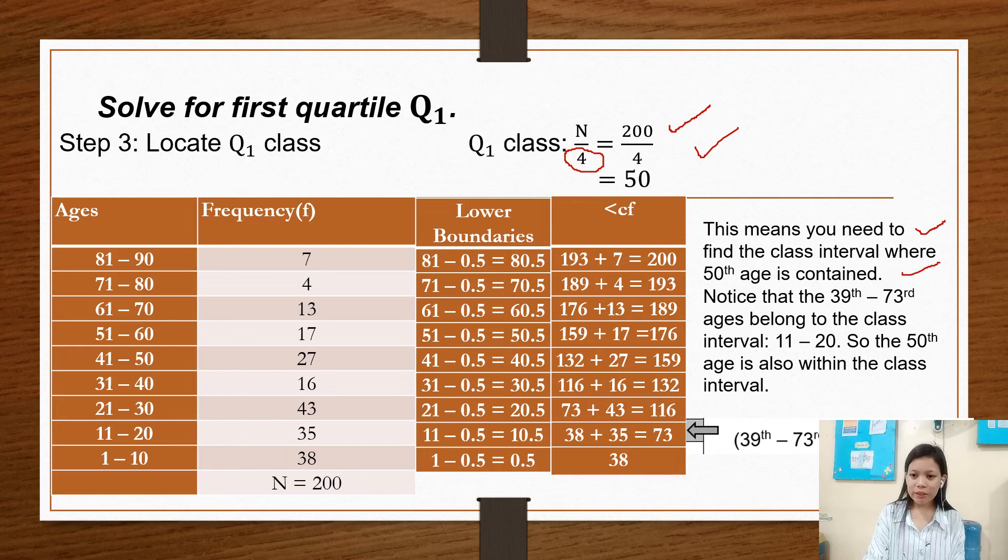So this means you need to find the class interval where 50th age is contained. Notice that the 39 to 73rd ages belong to the class interval 11 to 20. So the 50th age is also within the class interval. So we have here the 39 to 73 ages for Q sub 1 class because our 50 falls within 39 to 73 ages.